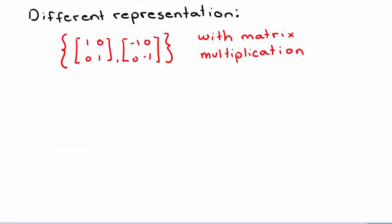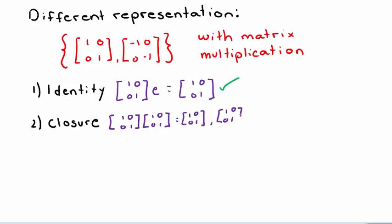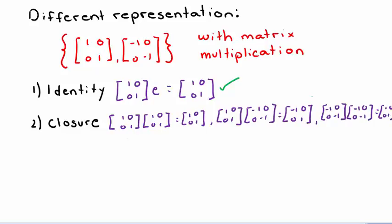Now let's look at a more complicated representation of this same group using two 2x2 matrices: the identity matrix [[1,0],[0,1]] and the matrix [[-1,0],[0,-1]]. Going through all four properties: the identity matrix exists in the group, so identity holds. Checking all combinations of elements, all results also exist in the group, so closure holds.